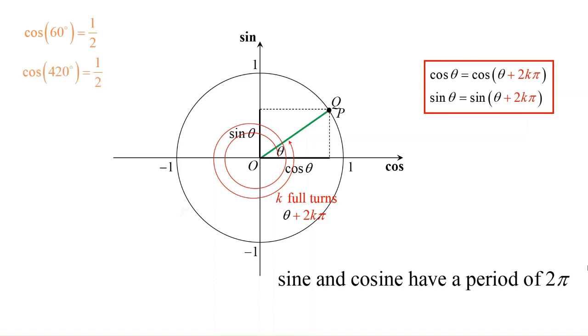Now cosine of 420 degrees would then also be equal to half as 60 degrees and 420 degrees differ by 360. 60 plus 360 degrees is 420 degrees, thus they have the same cosine ratio.